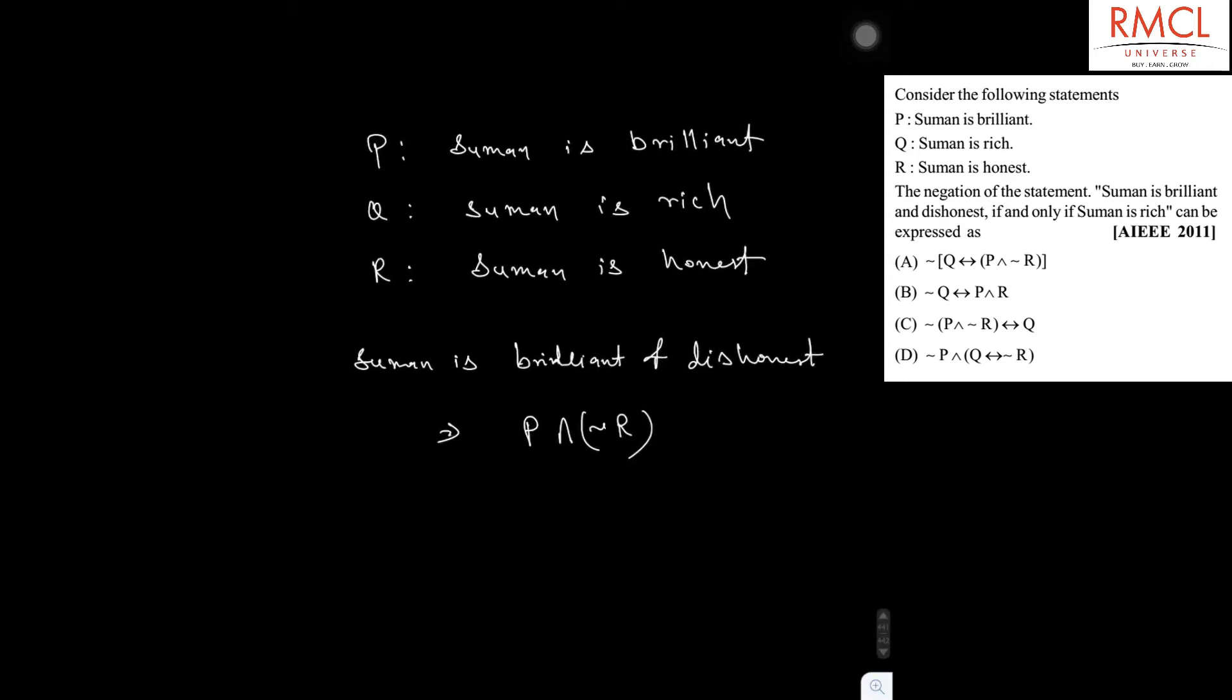Now we have to find the statement for Suman is brilliant and dishonest if and only if Suman is rich. If and only if Suman is rich, that is statement Q. So Q if and only if P and negation of R.